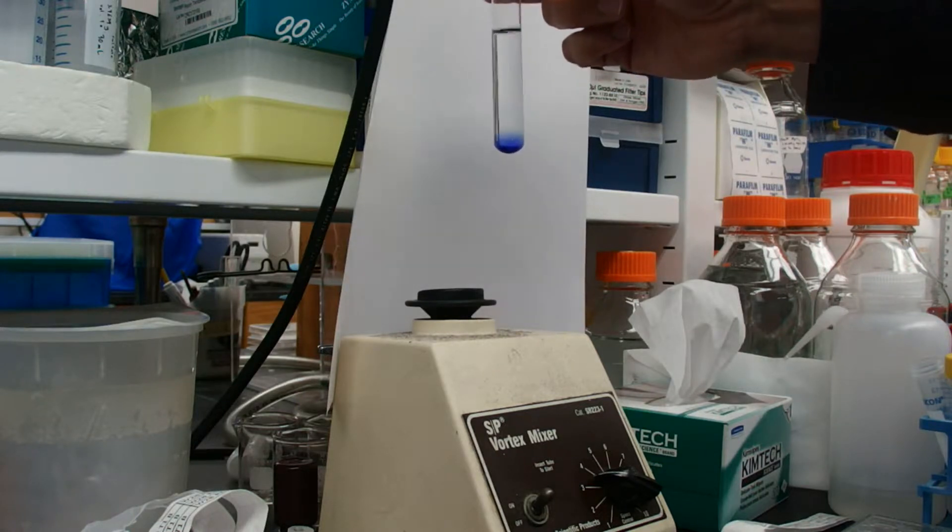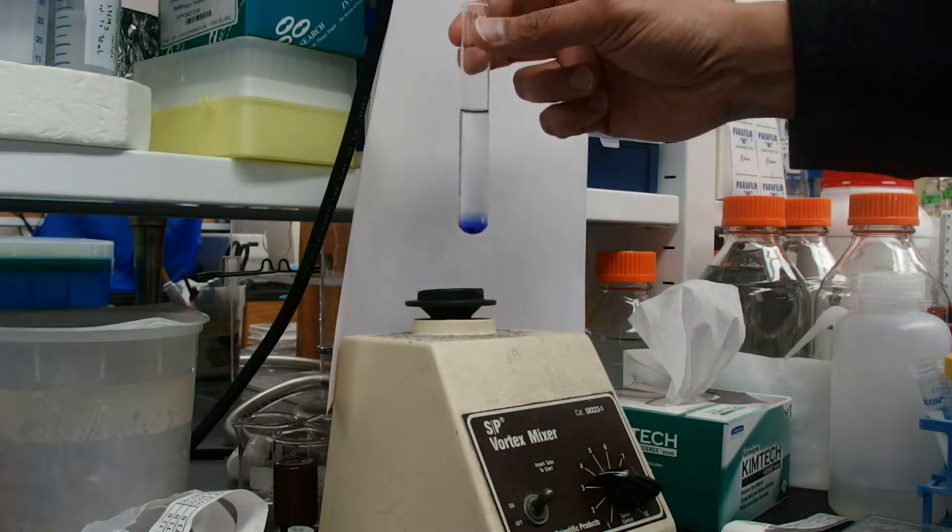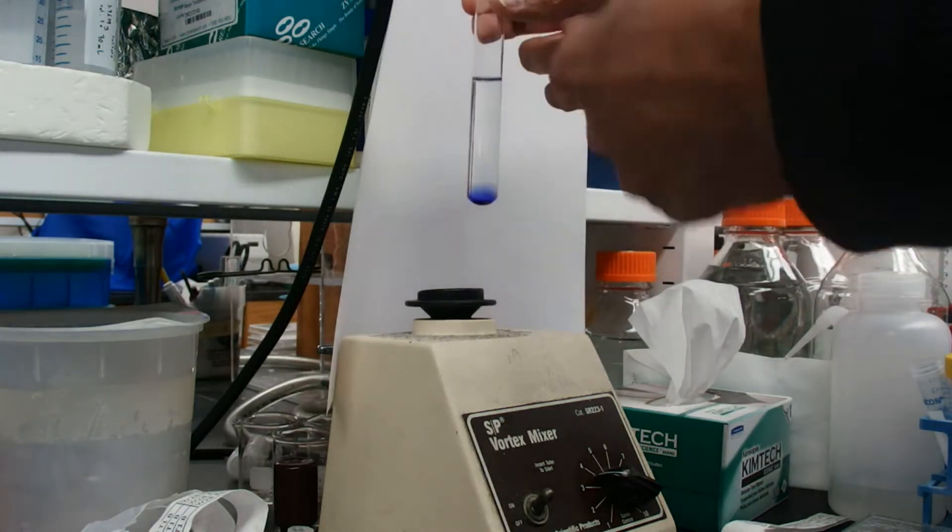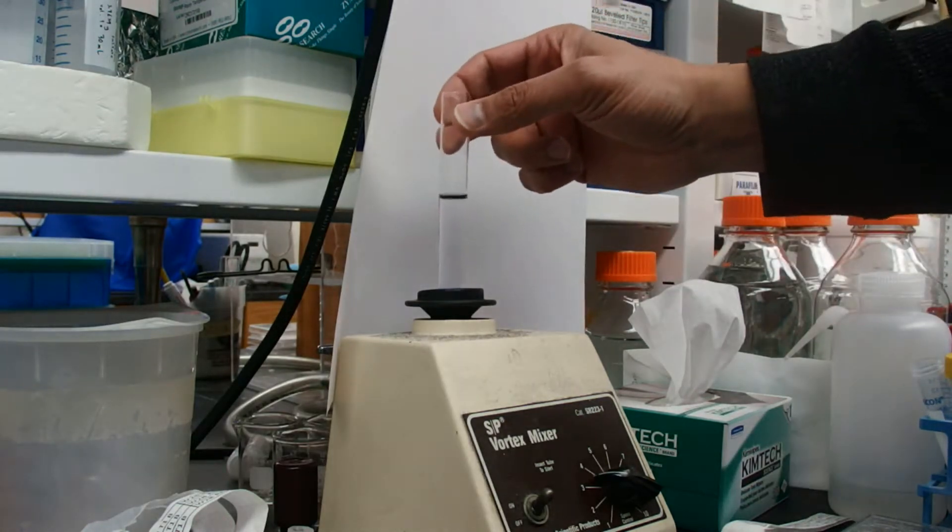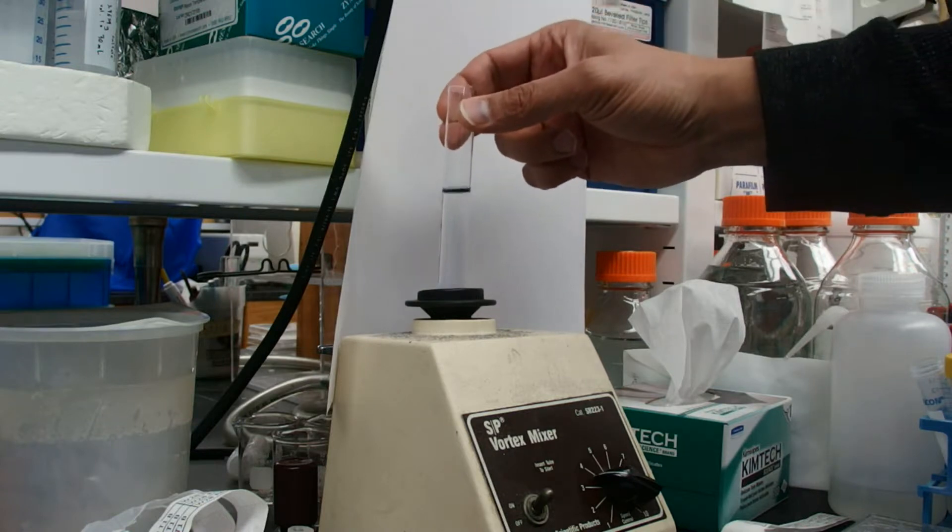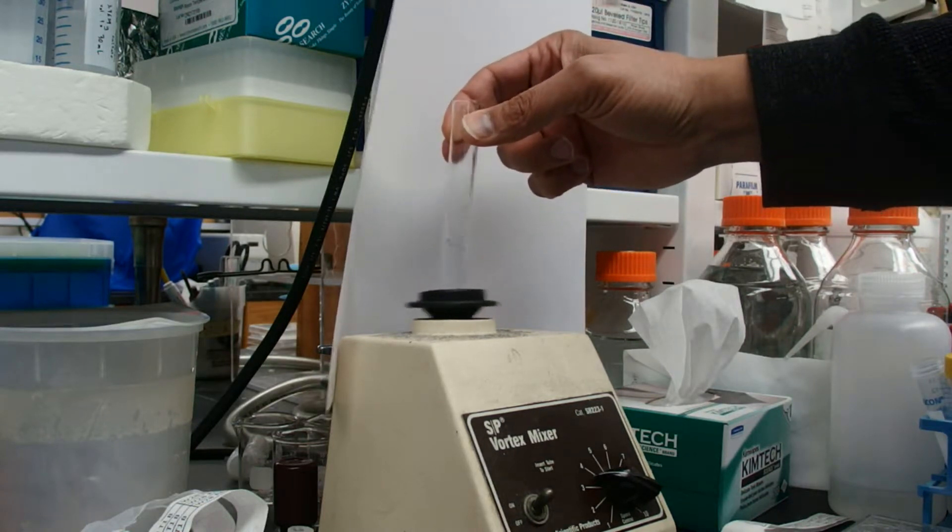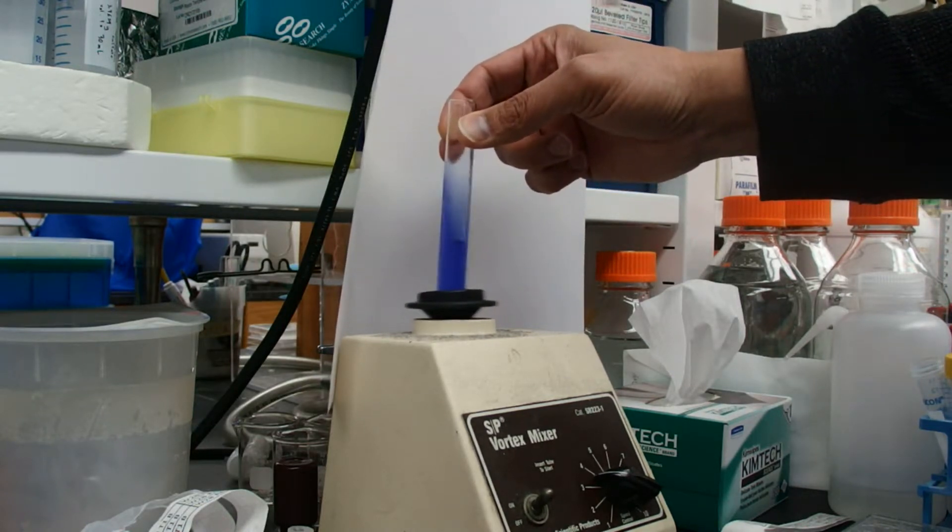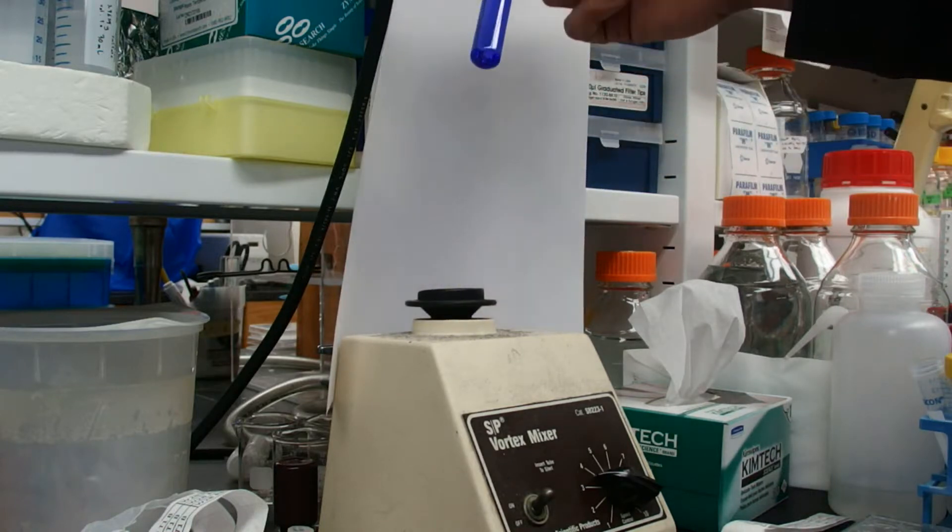We need to vortex a little bit harder, so that we get a swirling action around the inside of the tube, like this. And there you can see that now we have a very well-mixed solution.